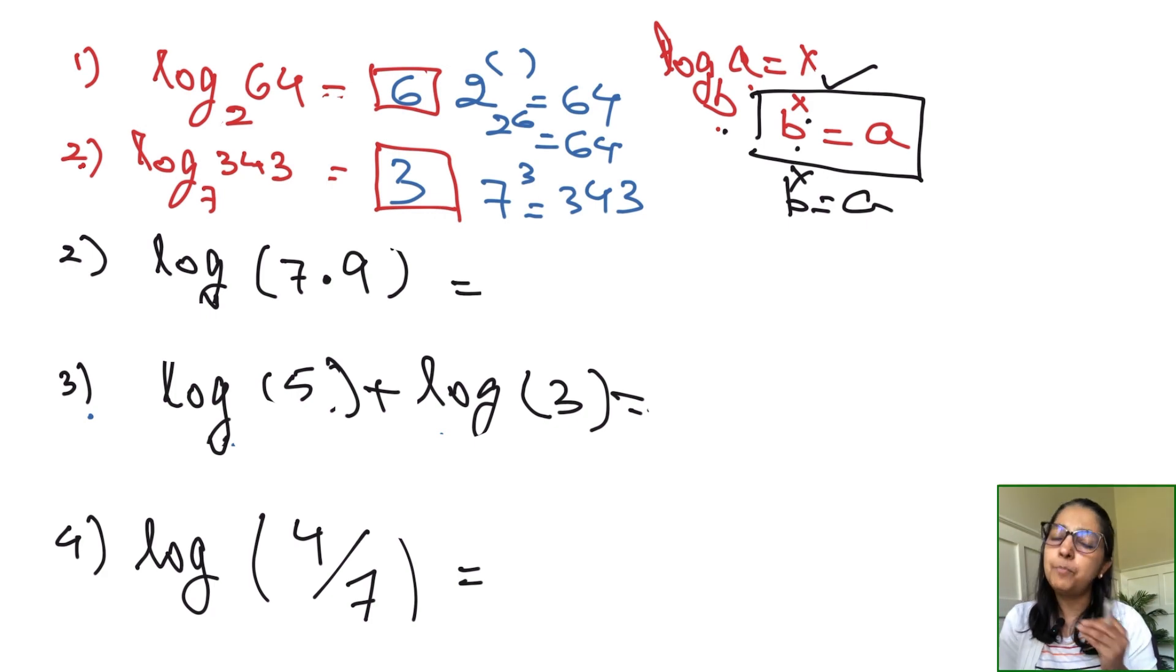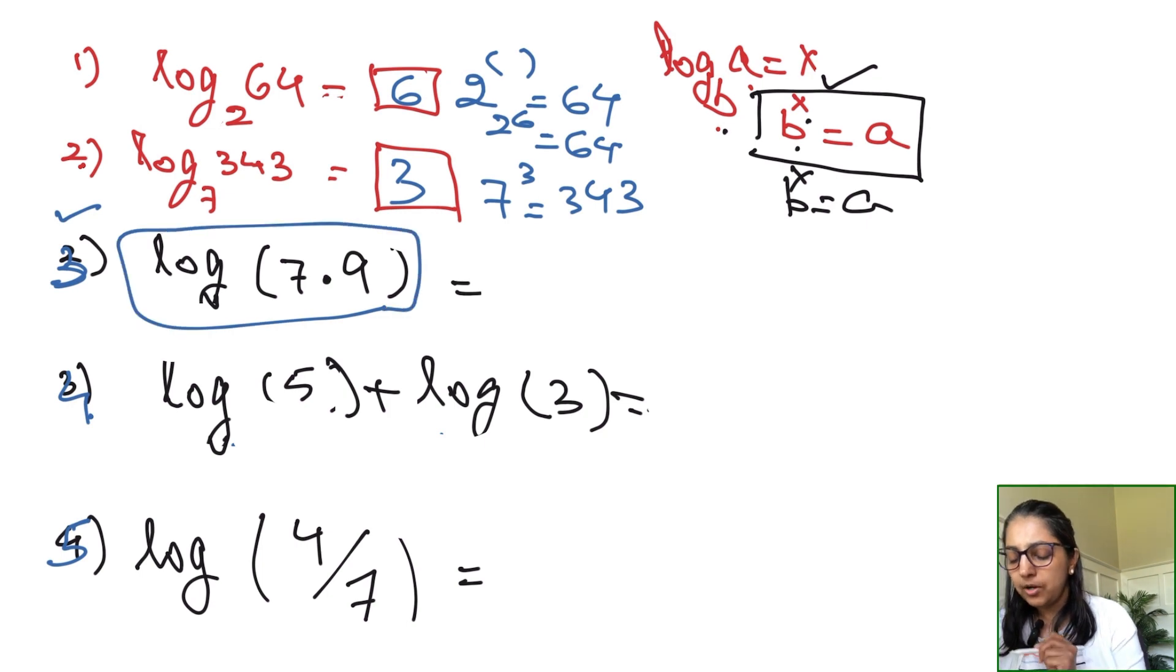There are two different kinds of questions on basic logarithm properties: an expansion question and a condensation question. A question type will ask you to expand, they'll give you the property like example number three, 7 times 9. The next example has the expanded form, the question will say evaluate, simplify, or write it in condensed form. These are direct applications of properties, pretty straightforward questions.